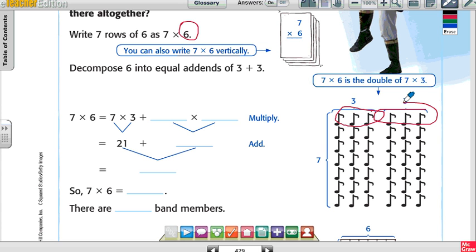Alright, let's say 7 times 6 is actually 7 times 3 plus 7 times 3. If you didn't know what 7 times 6 was, you do know what 7 times 3 is. You just have to double it, right? So 7 times 3 is 21. 7 times 3 is 21. And then, 21 plus 21 would be?